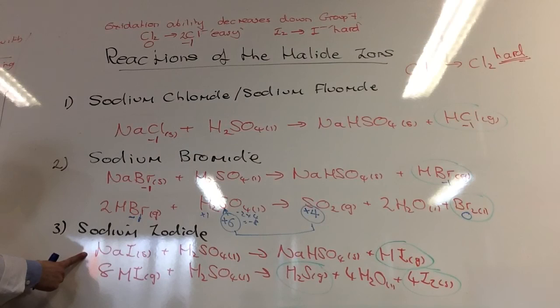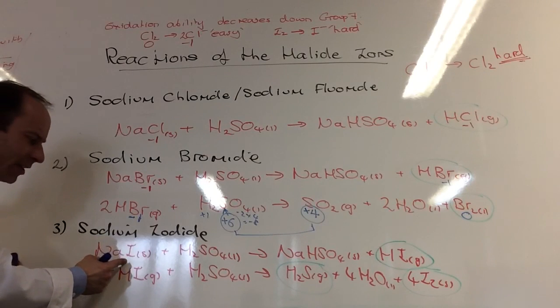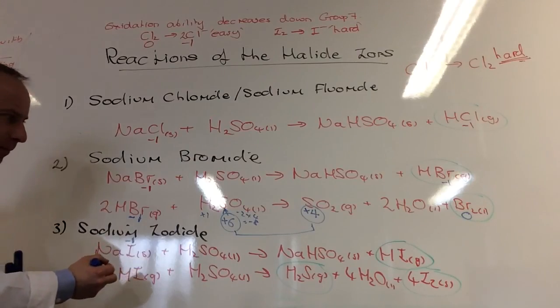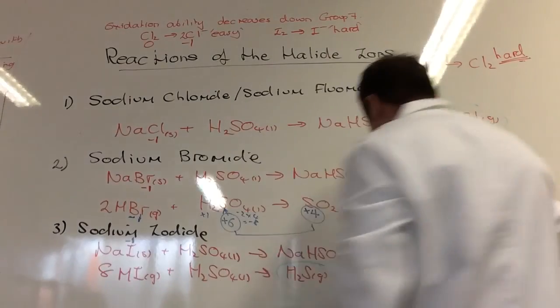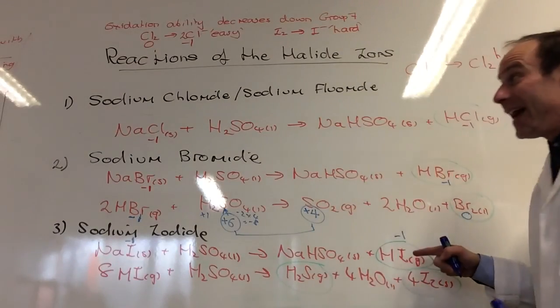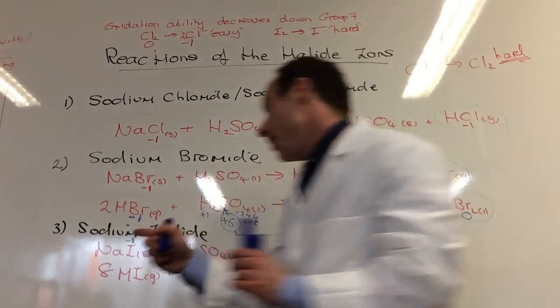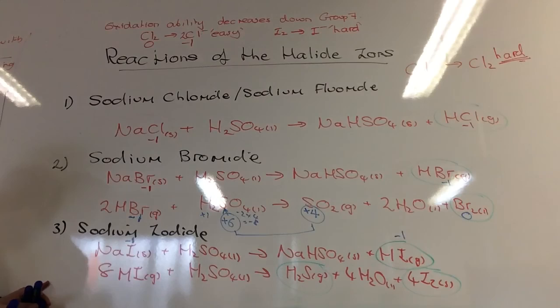And then I've got sodium iodide here. Iodine here is going to be minus one. Hopefully we're happy with that. And over here is going to be minus one. So again, this is the same as this equation. But let's have a look at what happens here.